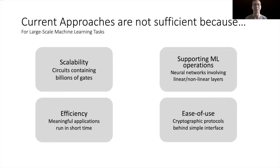The first challenge is scalability — we are facing circuits with billions of gates. The second is support for machine learning operations, since many neural networks involve both linear and non-linear layers, and many proofs are not ready to deal with all these complicated operations. Regarding efficiency, we need high-efficiency protocols to handle meaningful applications that can run in a short time. The last requirement is ease of use — we need to hide these cryptographic protocols behind simple interfaces so that anyone, not just crypto experts, can use zero-knowledge proof protocols for machine learning tasks.